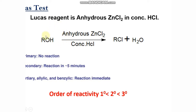When an alcohol reacts with the Lucas reagent, there is a formation of alkyl chloride. The three types of alcohols undergo this reaction at different rates. Tertiary alcohols react with Lucas reagent very rapidly. Secondary alcohols react somewhat slower. Primary alcohols do not react with Lucas reagent at room temperature.